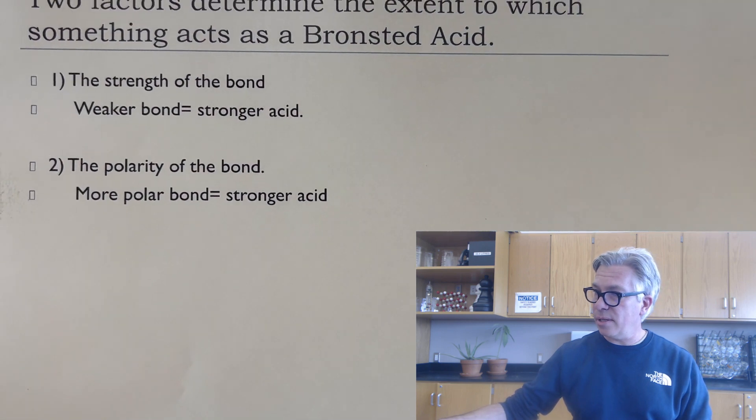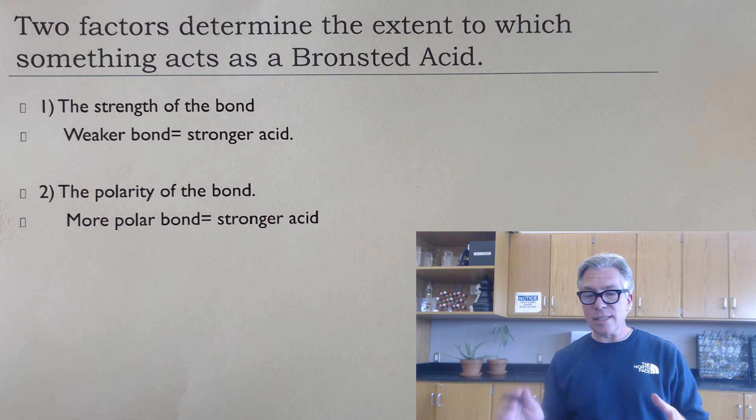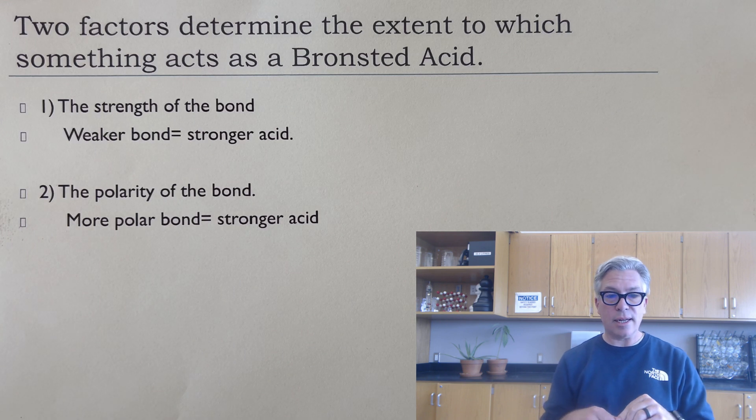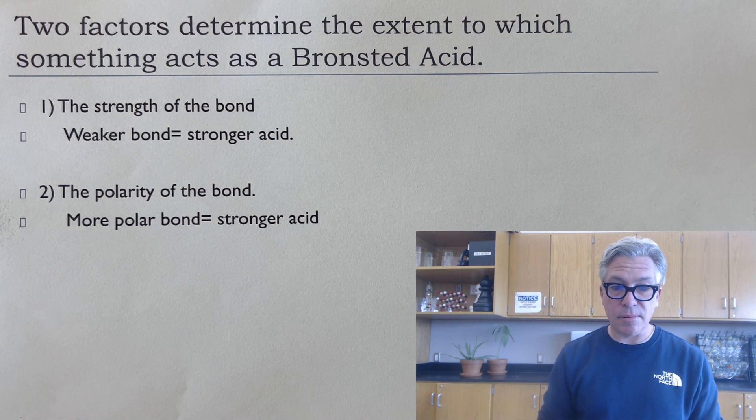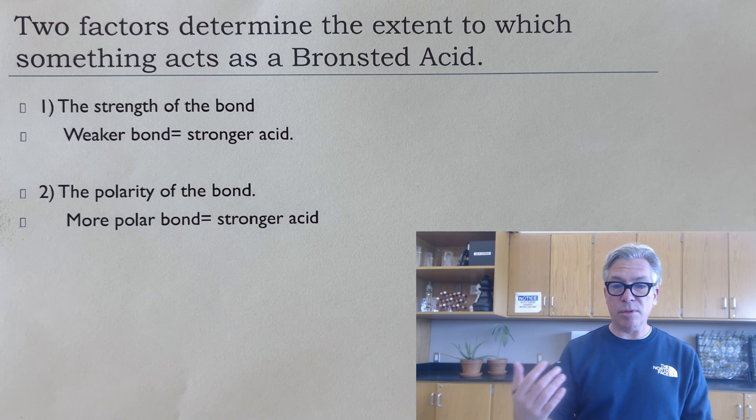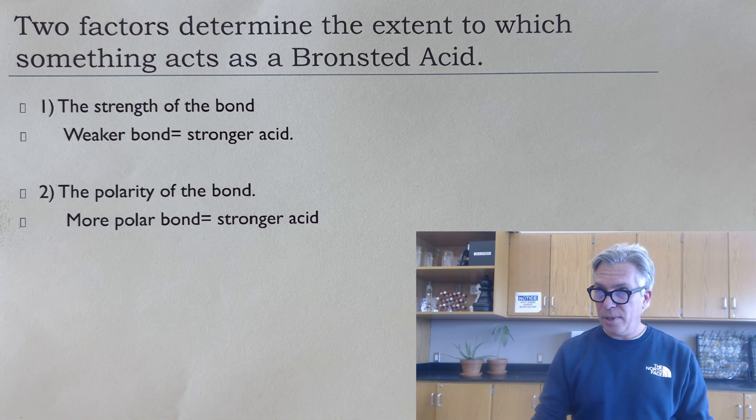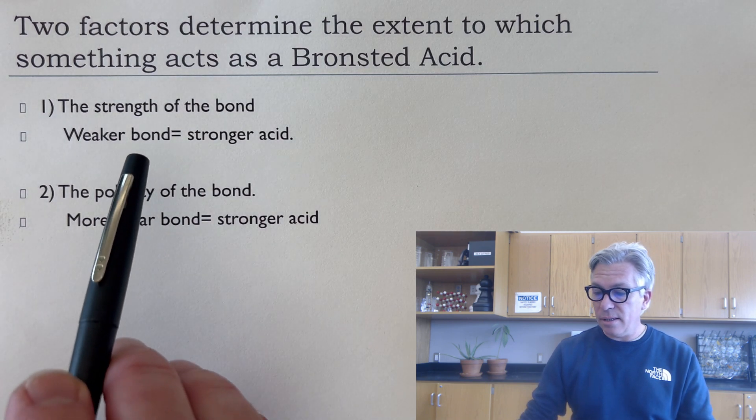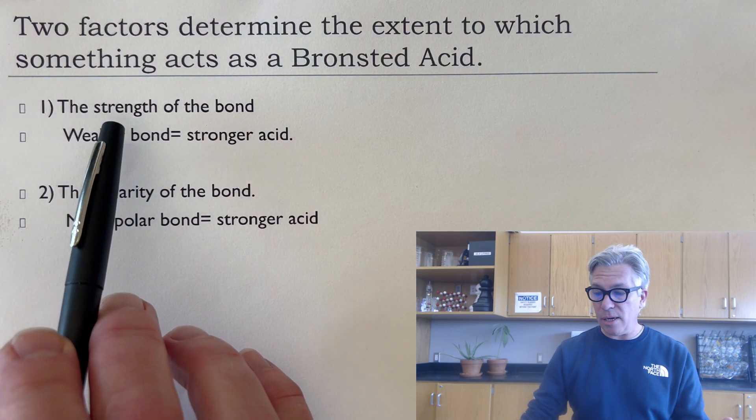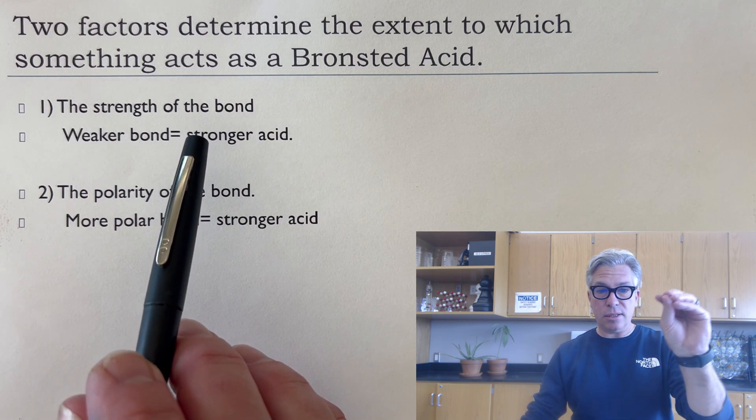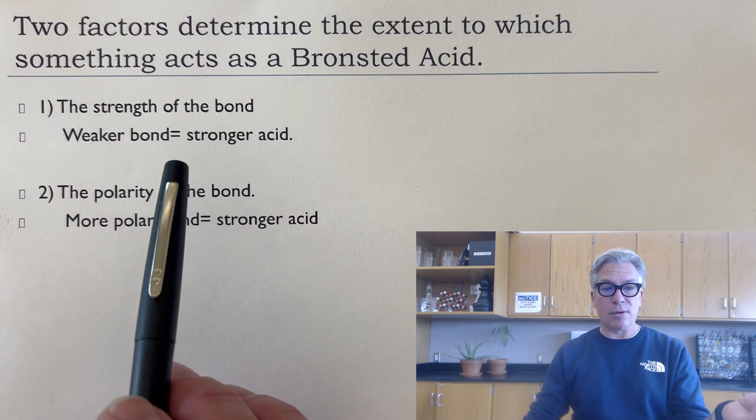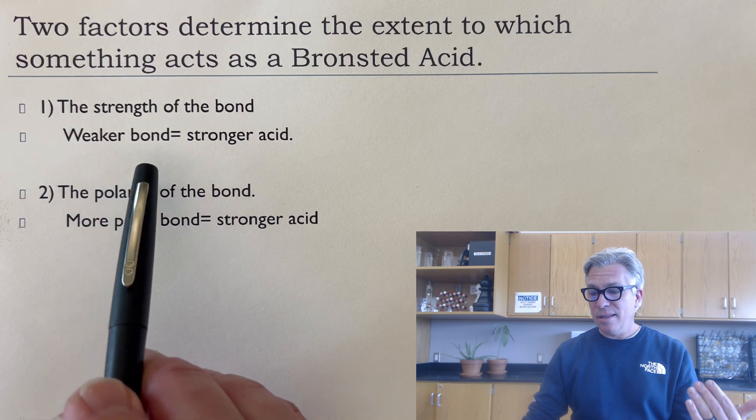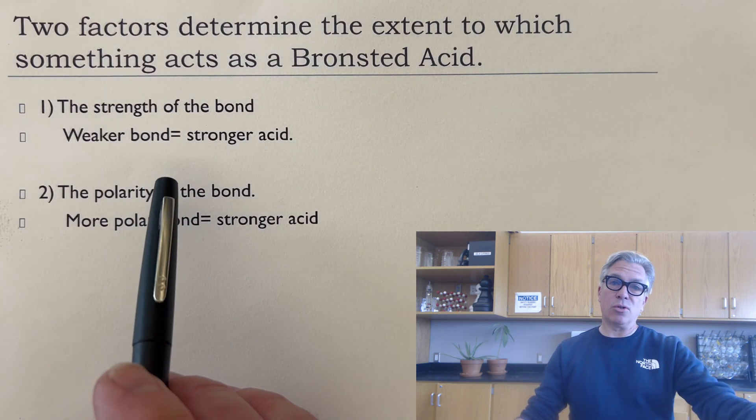All right, let's get down into acid structure. So it turns out there are two factors that determine the extent to which something acts as a Bronsted acid. Bronsted acid, we're using that definition as a proton donor. That's what acids do. They donate protons. And some acids are better at donating protons than others. So those would be more of our strong acids than our weak acids. And the extent to which they can be then has everything to do with, number one, the strength of the bond, meaning the bond to the hydrogen to the rest of the molecule, how strong that bond is. Because if it's a strong bond, that proton is not going to want to pop off very easily. But if it's a weaker bond, then the proton is going to pop off more easily. You'll have a stronger acid and so on.